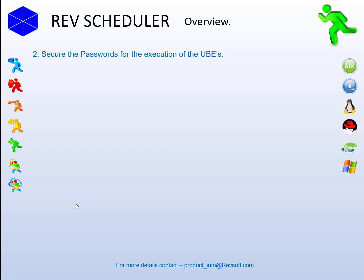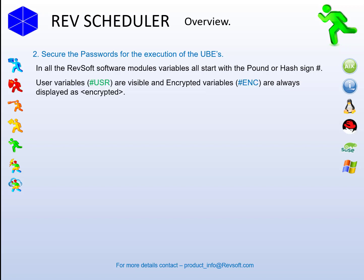The second thing was the exposure of passwords used to submit the UBE process. Just a quick note: in all RevSoft modules, variables always start with a hash or pound sign. User variables are hash USR, and the values are visible, whereas encrypted variables — hash ENC — are never visible and always displayed as [encrypted]. They will never be visible in RevScheduler tables, displays, logs, or job logs.